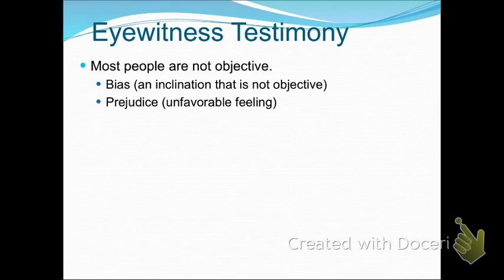On top of that, most people aren't objective, because of bias or prejudice. Biases and prejudices are preconceived notions that people come to a situation with — that they've been taught, or they've learned, or they've picked up over the years. Bias is an inclination that's not objective; there can be positive or negative bias. And prejudice is definitely a negative feeling.